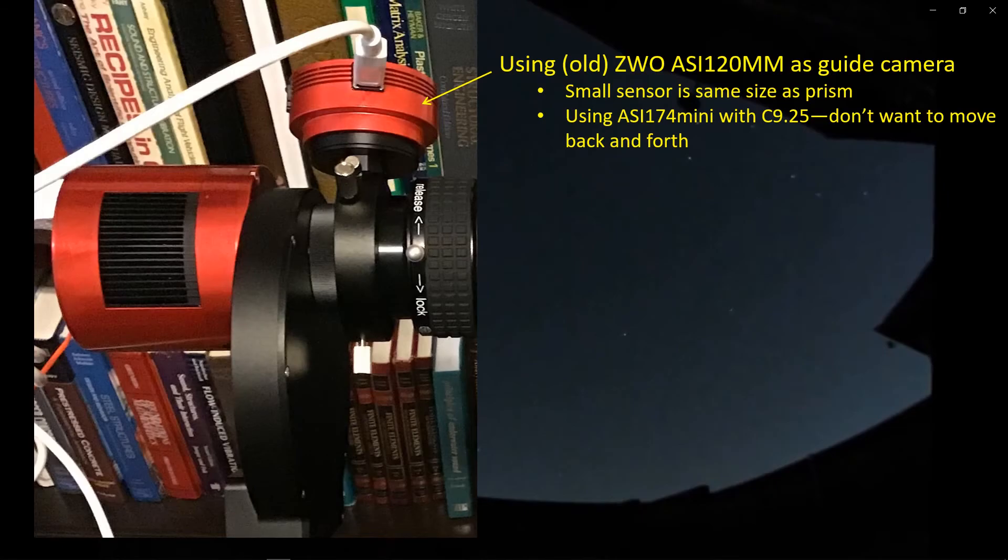Okay so here's the imaging train that I'll be using with the ZWO Off-Axis Guider in a couple of different configurations. First of all this is an old ASI 120MM, not obviously not the mini version which is out now and has replaced this camera. So I'm using this camera, it's been sitting around haven't been using it and so this is a good opportunity to bring it in. Also it's got a small sensor which is about the same area as the prism or the light that comes up from the prism from the Off-Axis Guider so it's a good match there. I'm not wasting any real estate with the sensor.